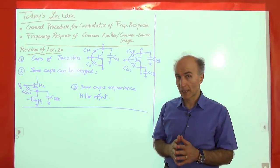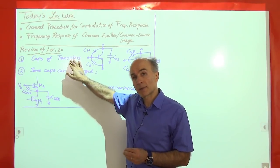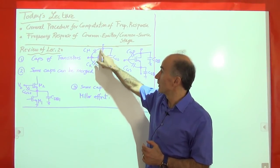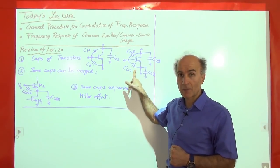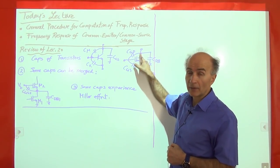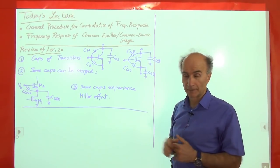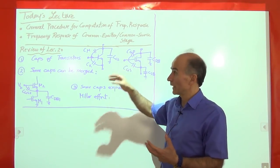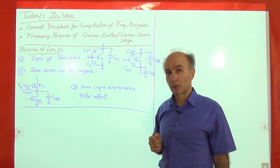Just a quick review of what we saw last time. We identified the capacitances of bipolar and MOS transistors. A bipolar transistor comes with three capacitances: C_PI, C_MU, and the collector substrate capacitance C_CS. And the MOSFET comes with four capacitances: C_GS, C_GD, and then two caps from the drain and the source to AC ground, C_DB and C_SB. Any circuit consisting of these transistors must include these capacitances before we proceed to the high frequency analysis.